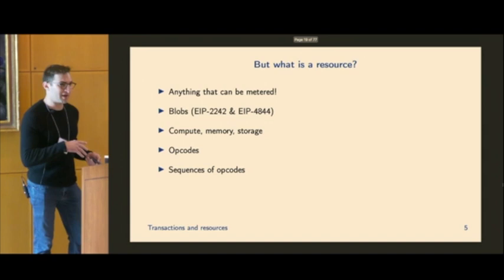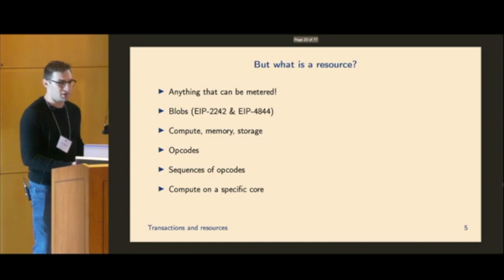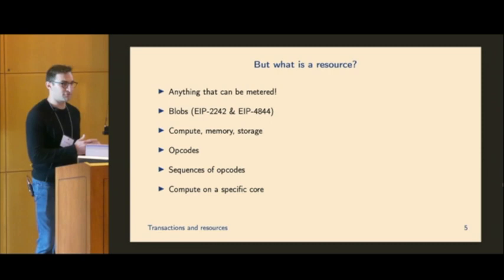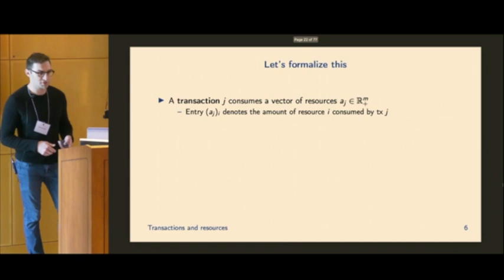We could go all the way down to the individual opcodes and say there's actually a different unit of gas for every single opcode. We could actually go further down than that and talk about sequences of opcodes. So imagine if you have, if you're reading some slot of memory and you want to do that multiple times, the second time is going to be cheaper than the first time because it's already a hot slot. We could also say, if we want to parallelize execution, different compute on different cores could be its own resource and so on. So you can imagine this is very flexible as long as we can say how much of this thing we're actually using, it can be a resource.